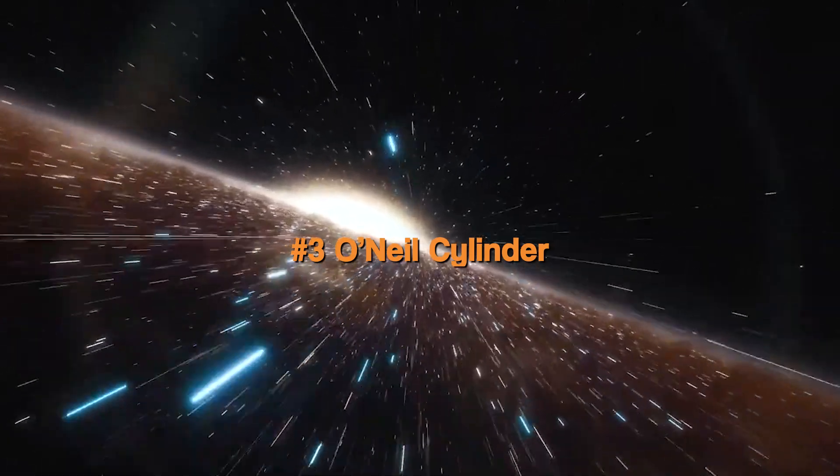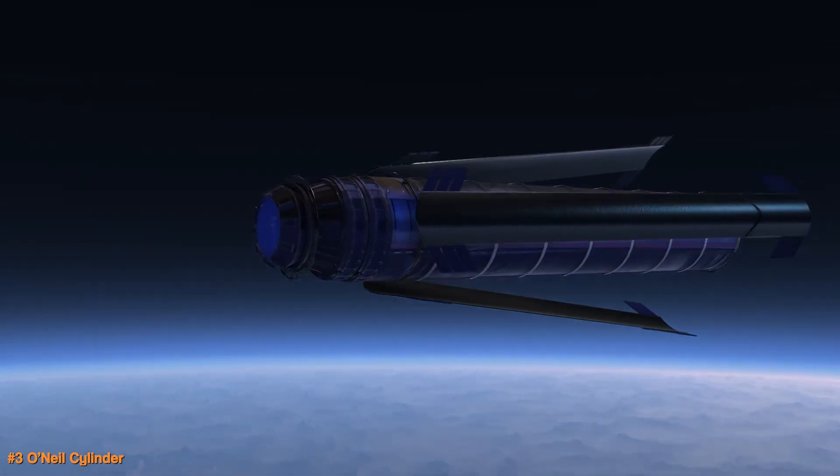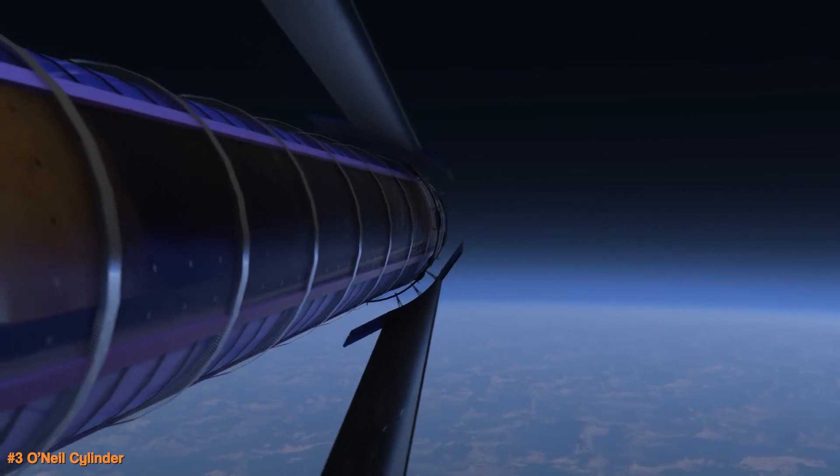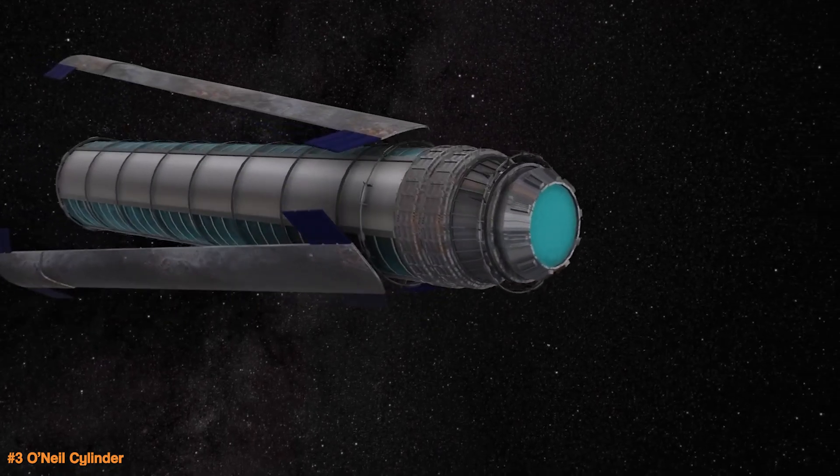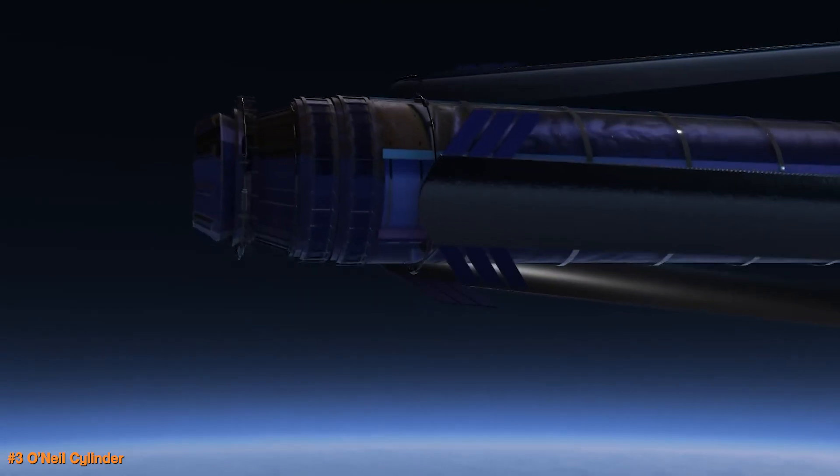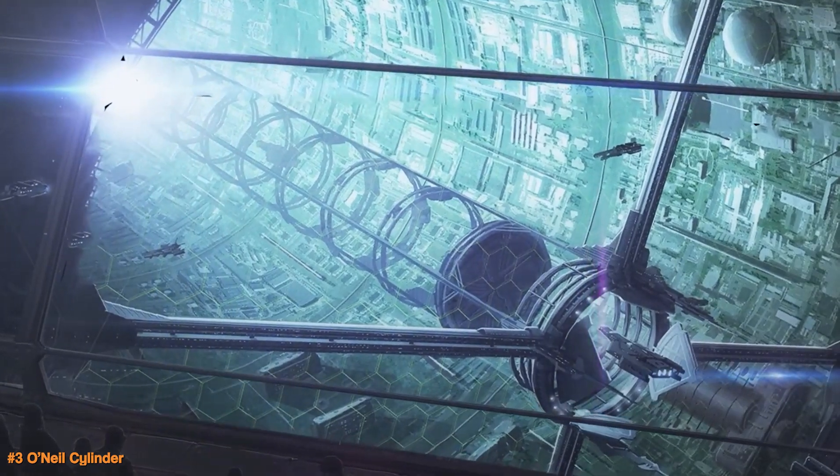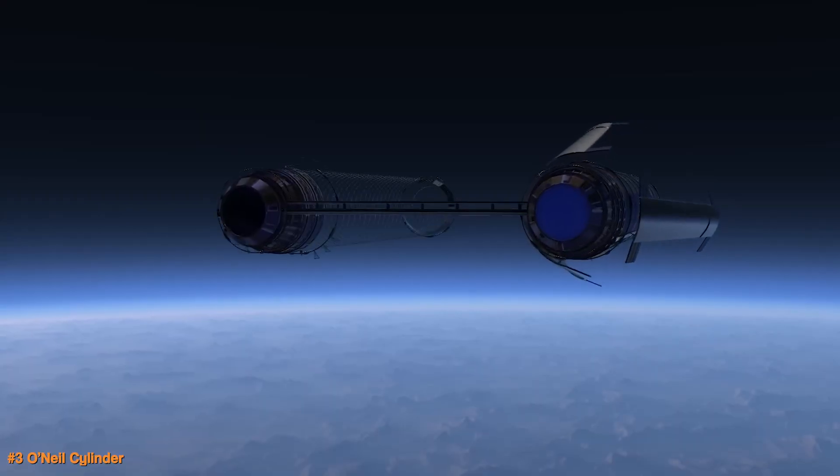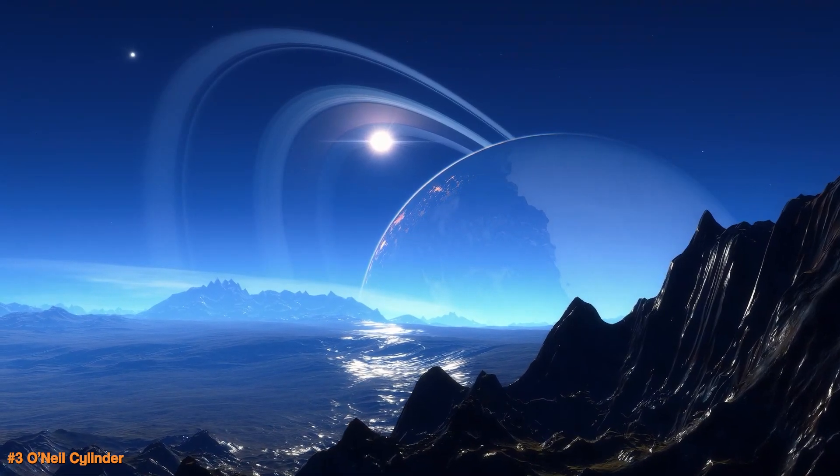Another way humans would move through space in the future would be by using these gigantic O'Neill cylinders. O'Neill cylinders are huge space homes shaped like long tubes. They spin to create gravity so people inside feel like they're on Earth. The walls of the tube are where people live with land, houses, and farms. Big mirrors bring sunlight inside so there's light and plants can grow. They're made to recycle air, water, and waste so everything is reused.